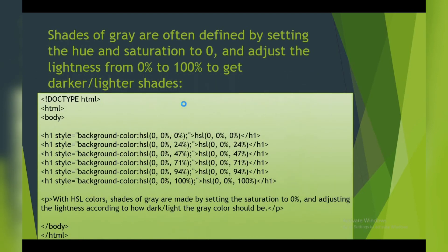For lightness, we have shades of gray also. It is often defined by setting the hue and saturation to zero and adjusting the lightness from zero to 100 percent to get the darkness or lightness shades. Same example: try by yourself or wait for my notepad explanation.